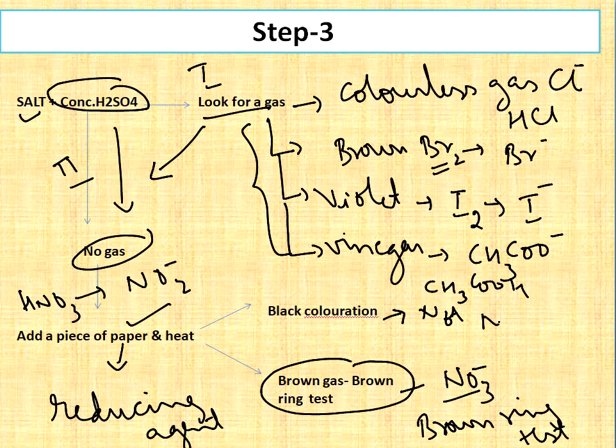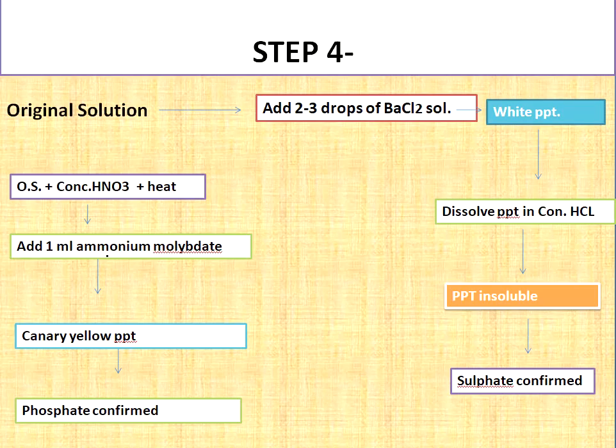Next, if black coloration is observed, then it will be not nitrate. Nitrate is not there, maybe another is present. This is the third step. Next, we are moving to the fourth step.